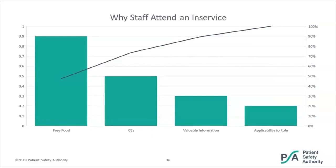Going back to our in-service attendance example as a Pareto chart — the line graph uses the right-side scale showing percentages. You can very easily see where you want to focus if you want to get staff to attend an in-service. When you get into large amounts of data — 100 or 200 different factors — highlighting the tallest ones up front makes it much easier to identify and read them, and to graphically show when presenting to others or on a dashboard.